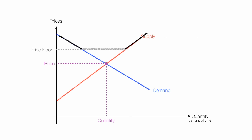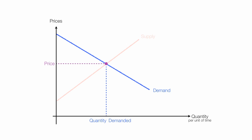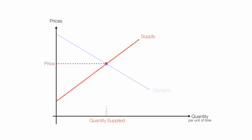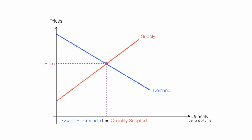At equilibrium, quantity demanded is equal to quantity supplied. Right here at equilibrium is quantity demanded, and that's the same thing as quantity supplied at that point. So at this point, quantity demanded and quantity supplied are equal to each other. You'll see it written in your textbooks as QD equals QS.